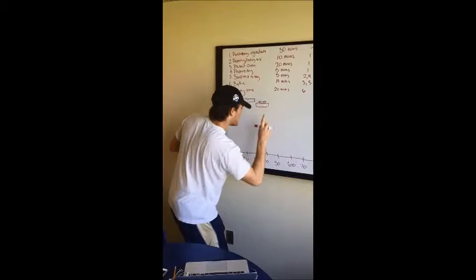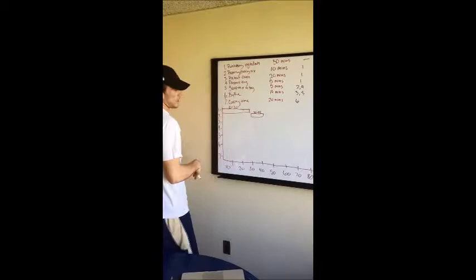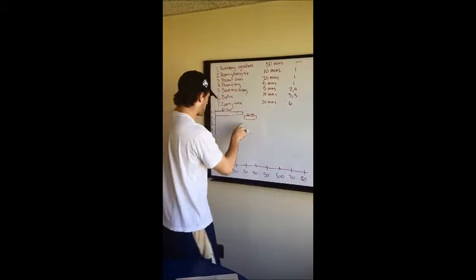So now our third step is preparing the oven. In order for the oven to heat all the way, it takes 20 minutes. But we can't do that until our ingredients are bought. So this again will start at 30 minutes and will end at 50 minutes.